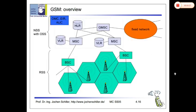Now entering the core GSM overview. The NSS includes OMC (Operation and Maintenance Center), EIR (Equipment Identification Register), and AUC (Authentication Center). The BSS contains the BTS — Base Transceiver System — which is a tower. The BTS covers a cell area, and that cell is hexagonal in shape.